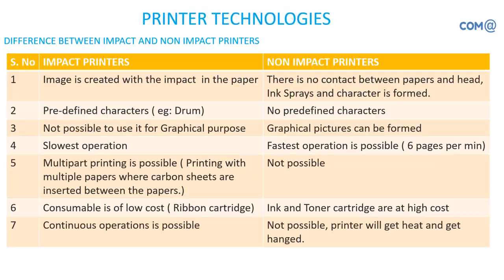Let's look at the difference between impact and non-impact printers. In the case of an impact printer, images are created with impact on the paper — it will be pressing and touching the paper. If you touch the paper on the backside, you will see some kind of projection. It makes more impression on the paper. It has predefined characters, so it is not possible to use it for graphical purposes. We will not use dot matrix or impact printers for graphic or photo printouts.